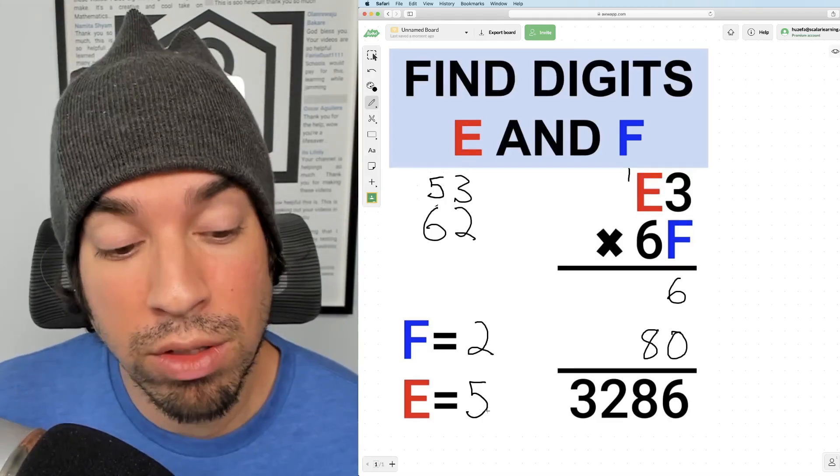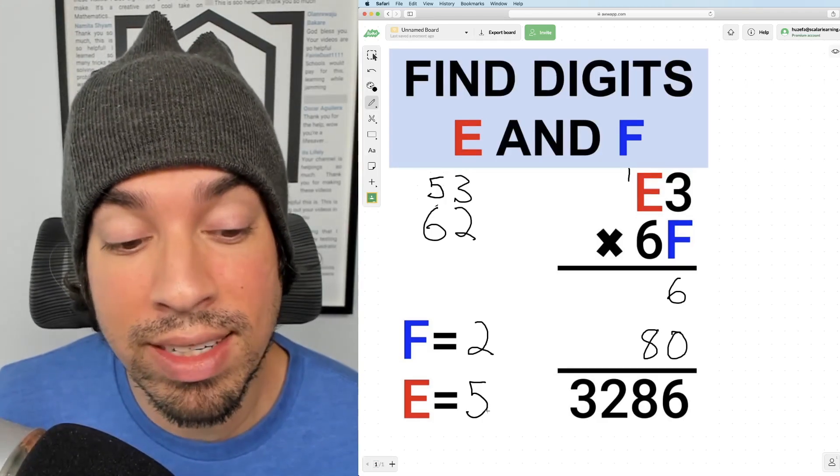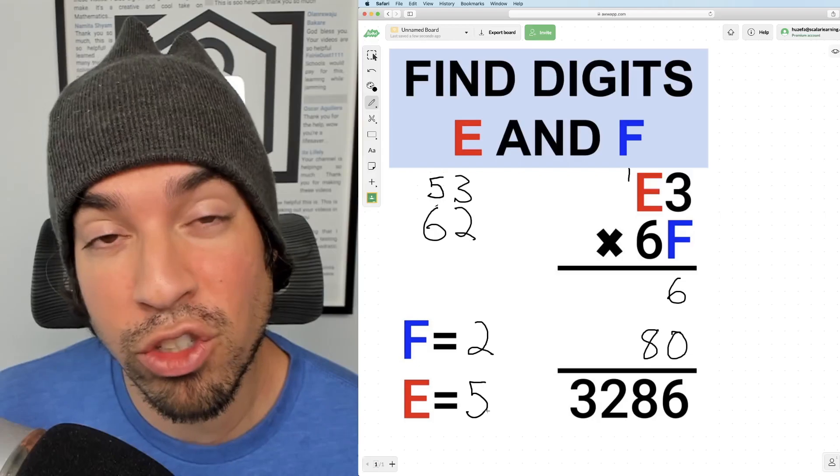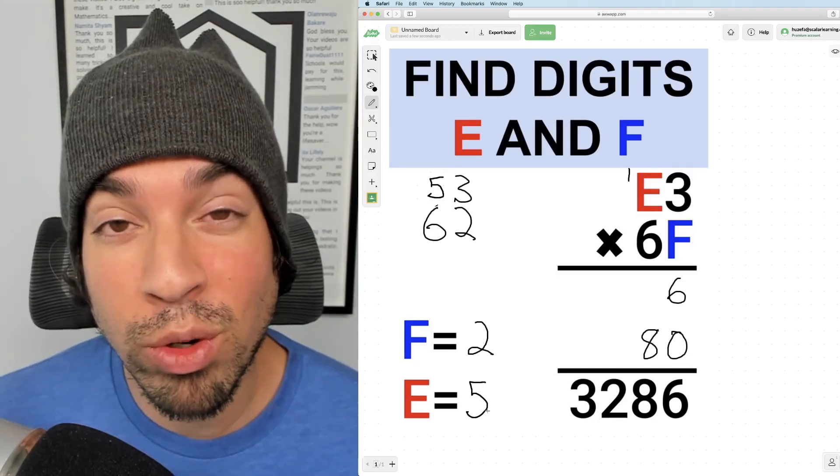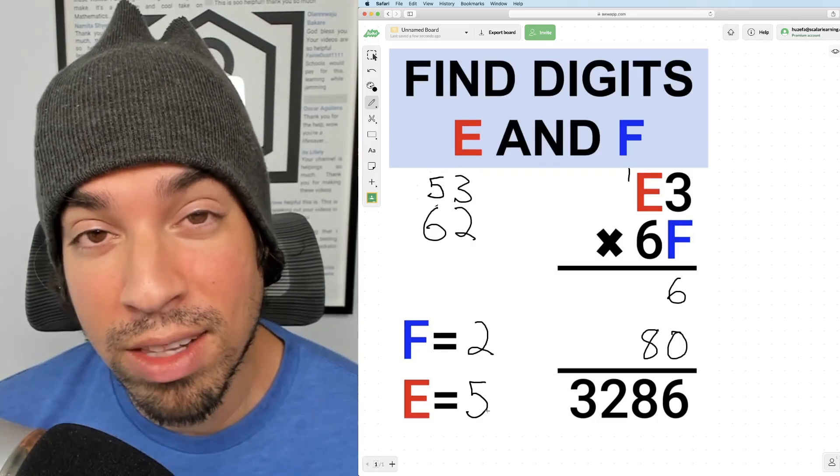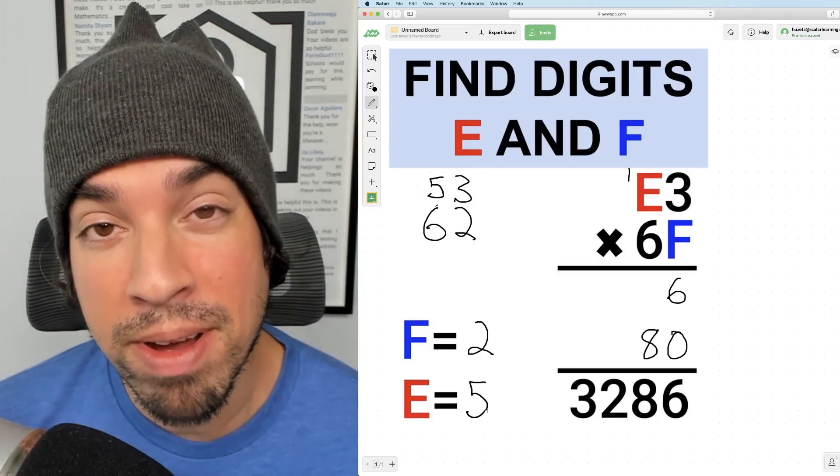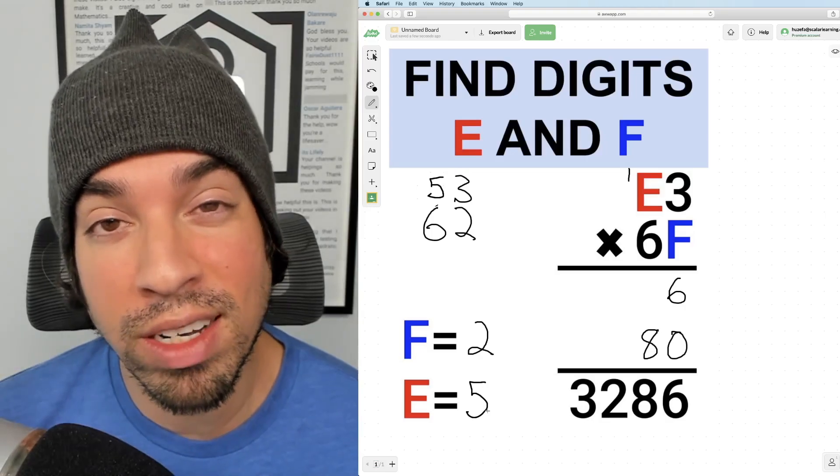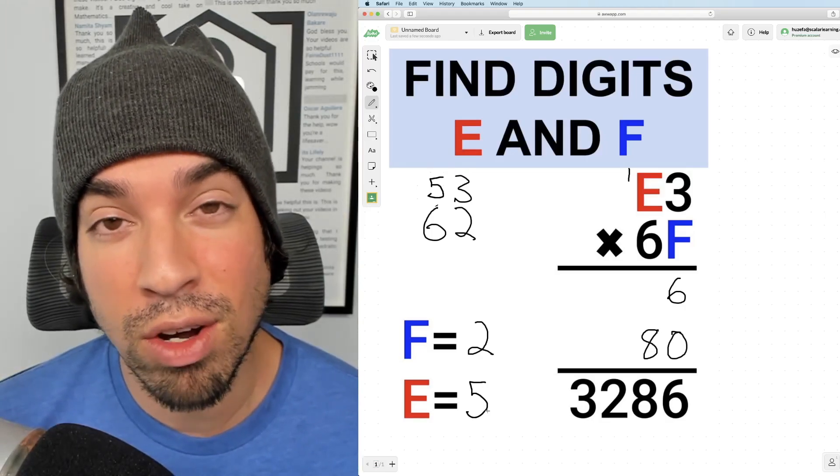And of course, if you do want to go ahead and multiply those numbers out, you'll see that we do indeed get 3,286. I hope you enjoyed this math puzzle. And if you did, please click that like button. And if you want to see more math puzzles on the regular, make sure to click subscribe. Thank you guys so much for joining and I will see you in the next video. Take it easy.